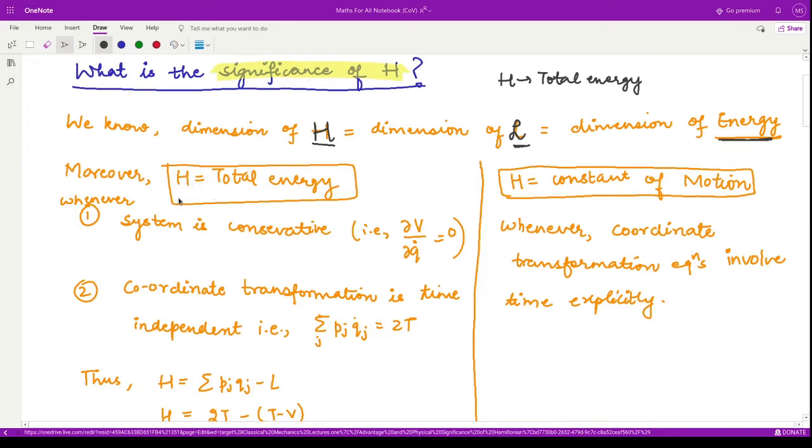This H represents total energy when our system is conservative, that means the potential does not depend upon the generalized velocities q dot. Please note that a conservative system is where the potential energy does not depend upon the generalized velocity. When you take the partial derivative of this potential, it would come out to be zero.